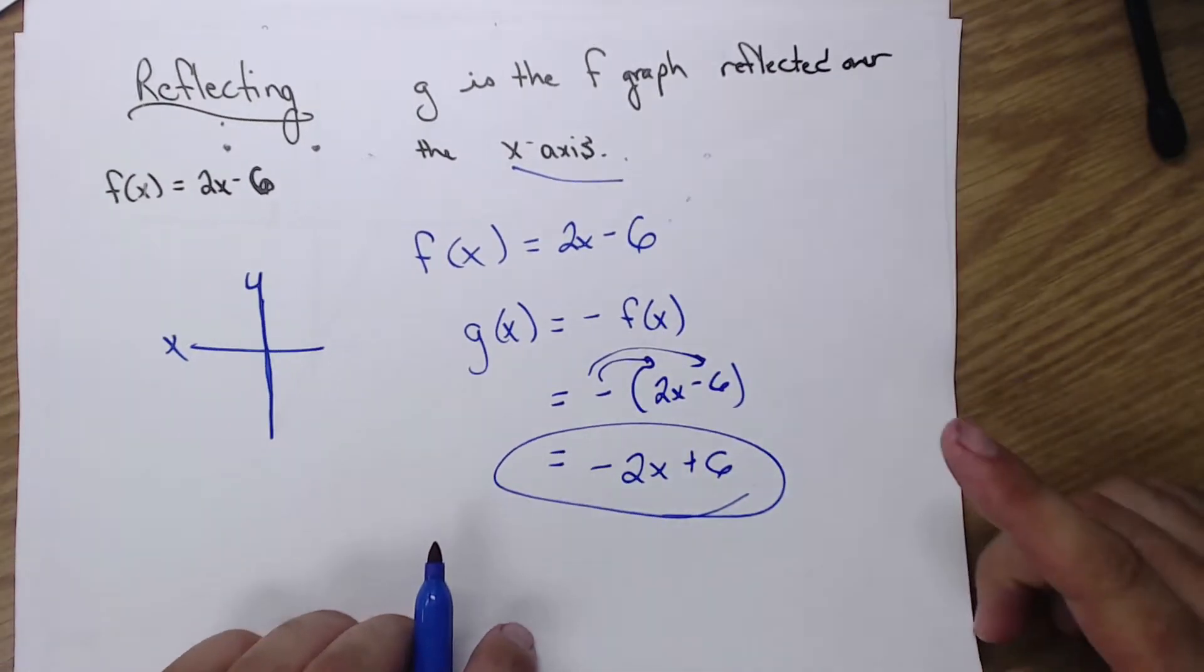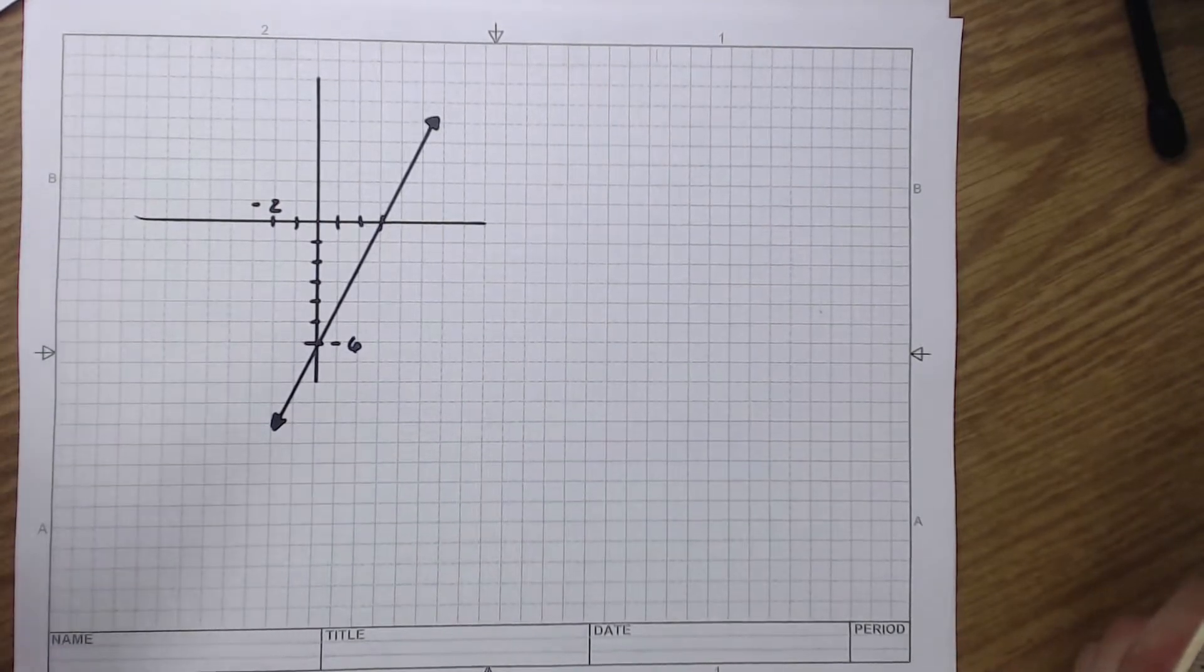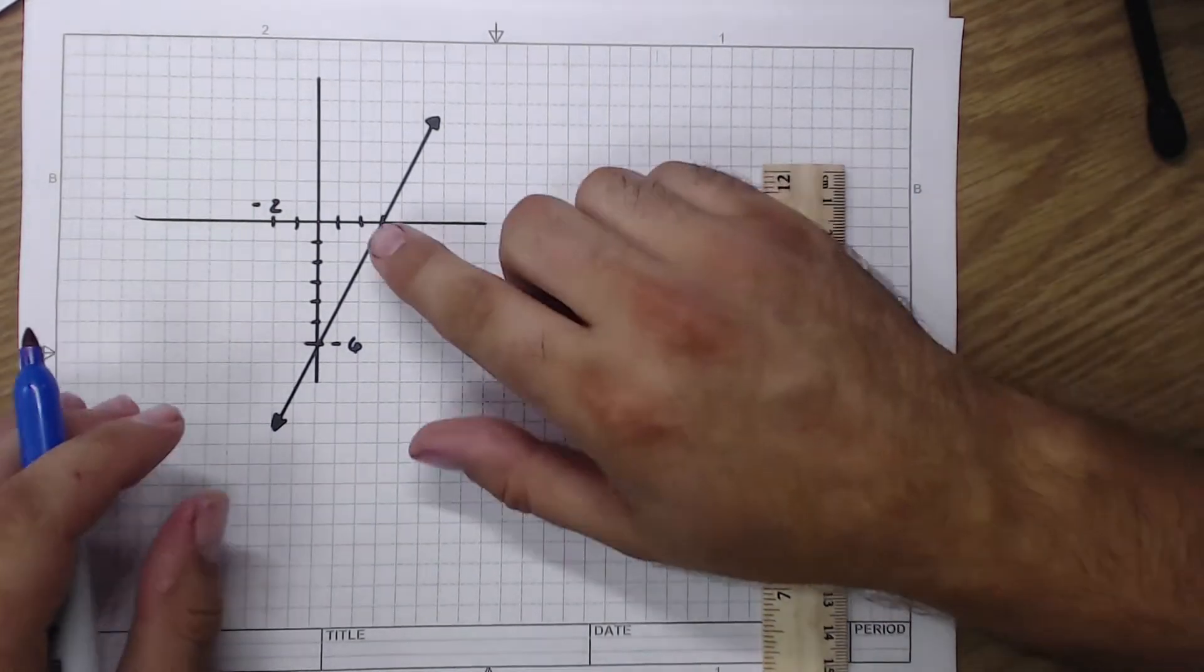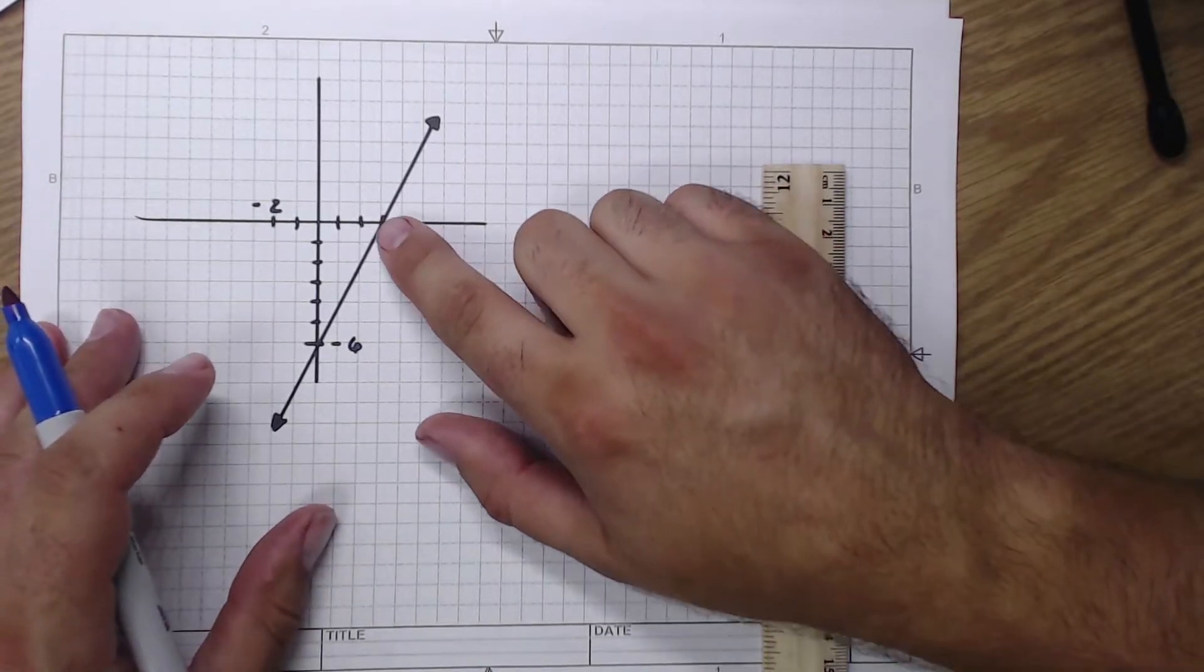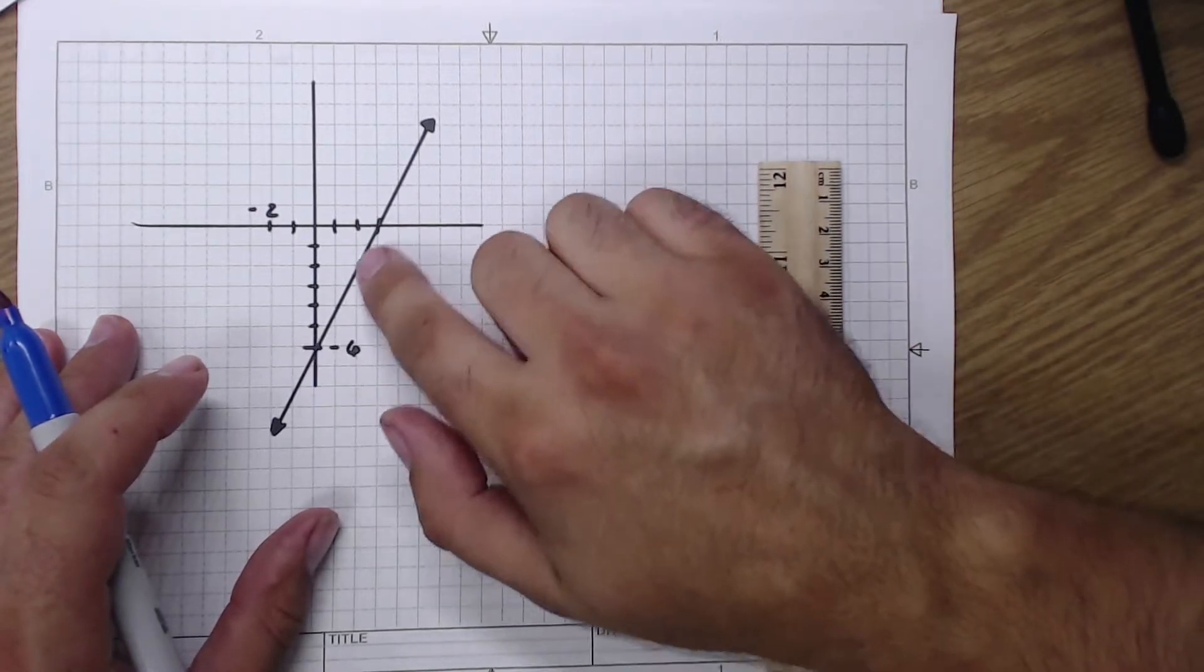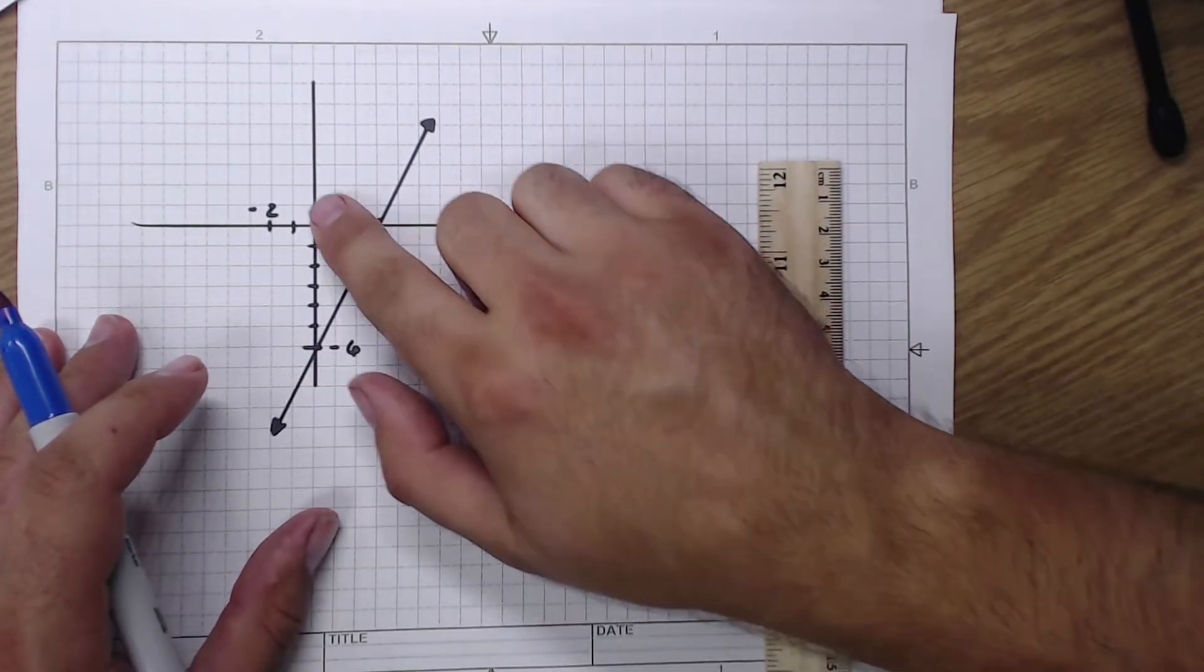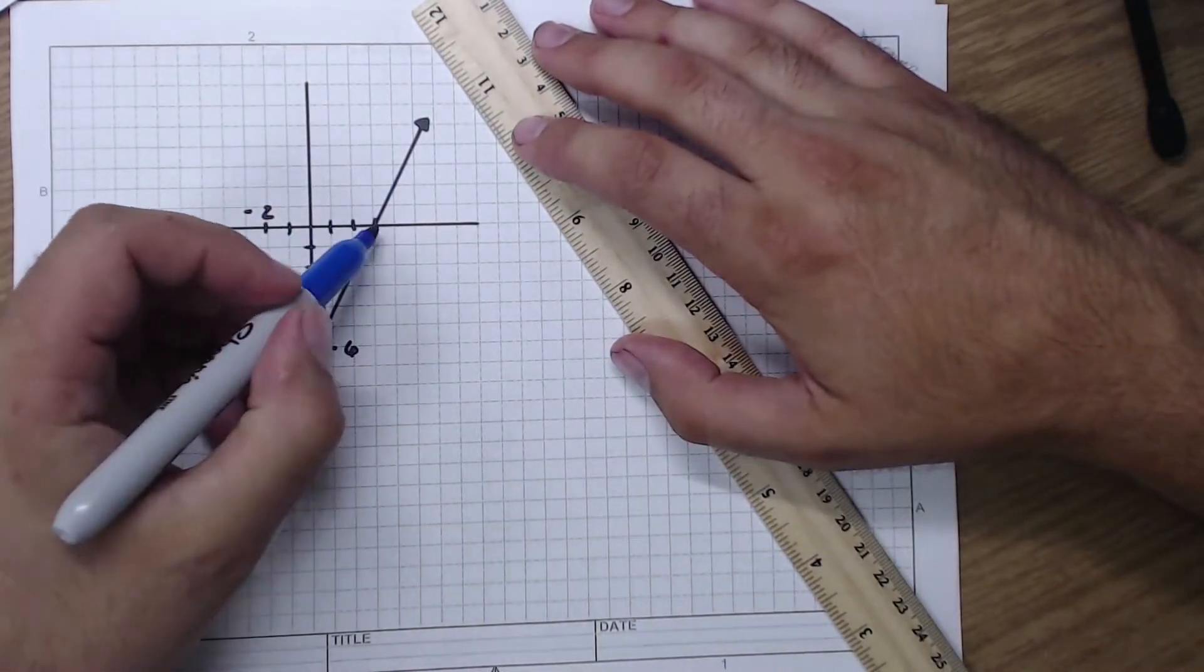g of x is going to be the negative of f of x. We know what f of x is. Just told you right here. It's 2x minus 6. Now, I'm going to distribute that negative sign to both of my terms. So I have a negative 2x plus 6. This should be the equation of my new graph. Let's go over. Let's reflect it using just the graph and see if these line up.